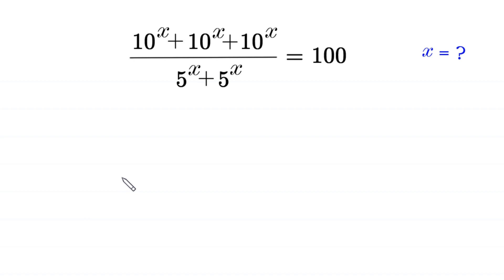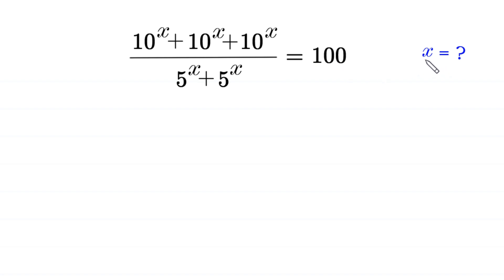Hello, welcome to how to solve this very nice exponential equation. 10 to the power x plus 10 to the power x plus 10 to the power x, divided by 5 to the power x plus 5 to the power x, is equal to 100. We need to find all possible values of x. So, let us start.